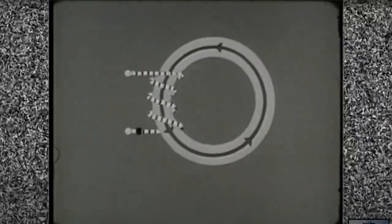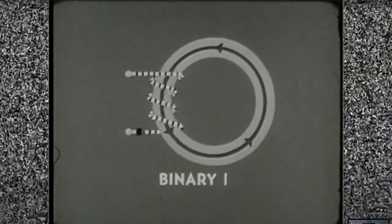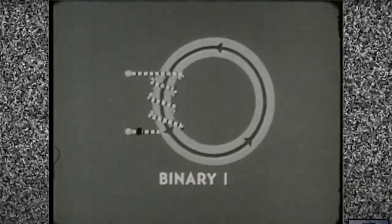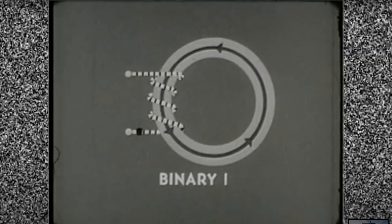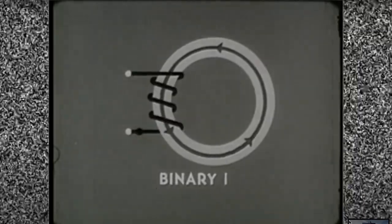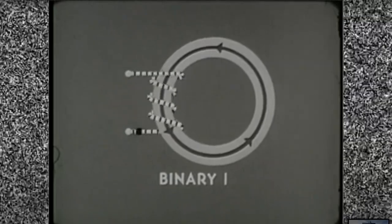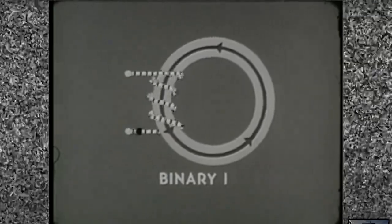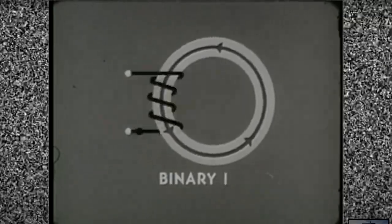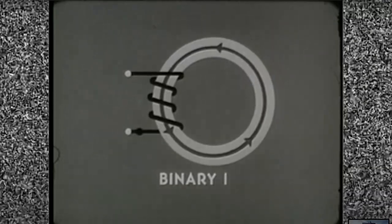When non-dot current sets the core to the binary one state, the residual property keeps it that way, indefinitely. Suppose there is a second pulse of non-dot current. It will have no practical effect on the core because the core is already saturated with positive magnetism.